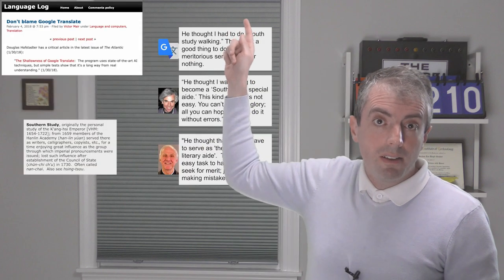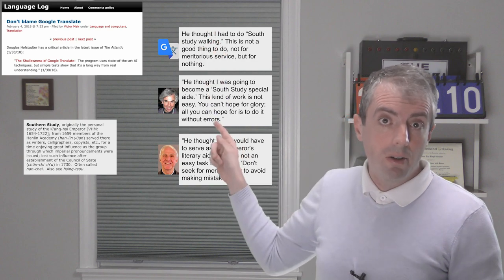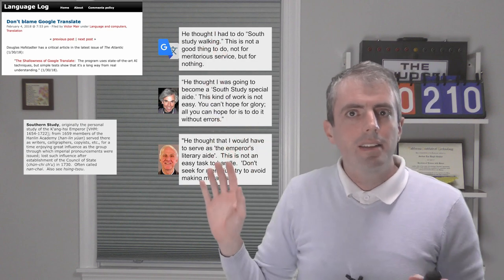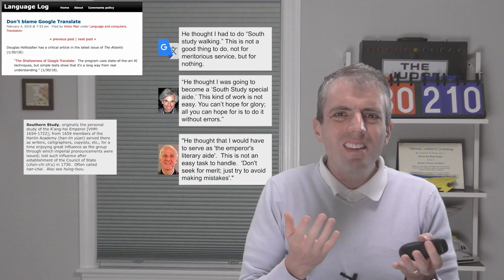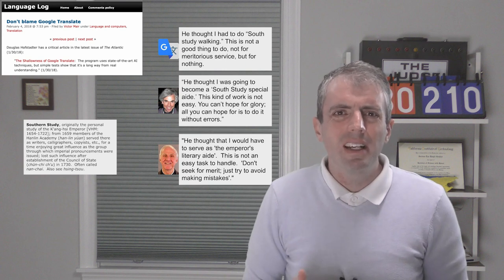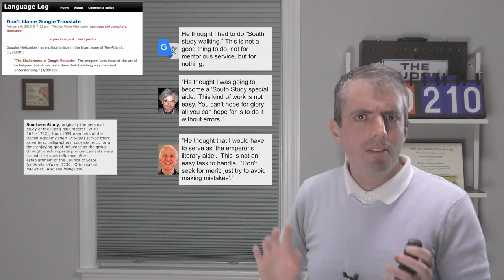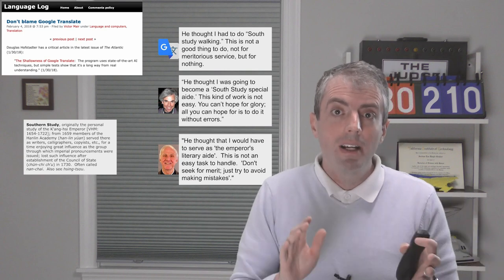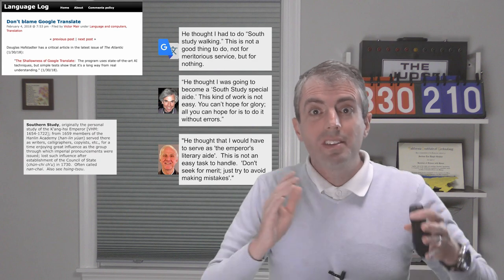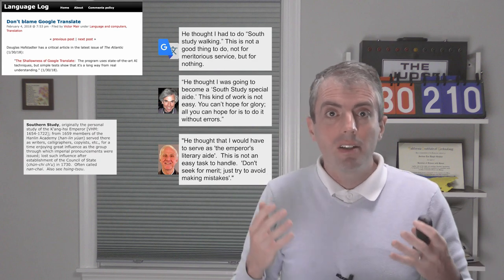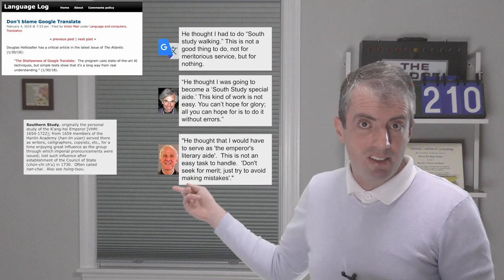Here again is a Google Translate rendition. Hofstadter creates his own version of it. This still doesn't make sense to me. What's Southern about what he's doing? In a language log post, Victor Mair digs a little bit deeper to uncover that the third Qing emperor created a literary advisory council, which is a historical allusion better explained in the final translation here.